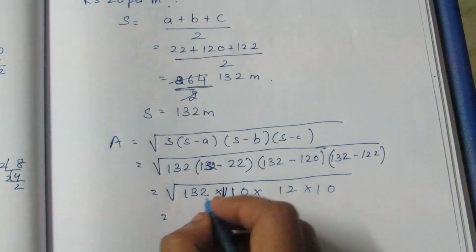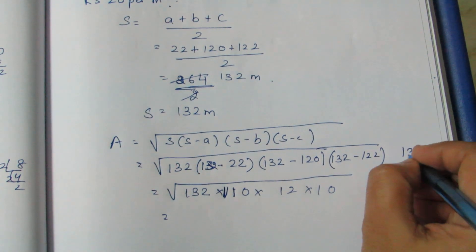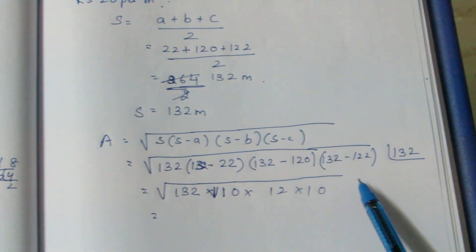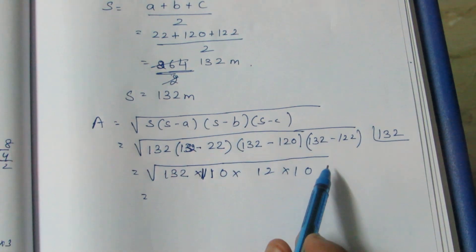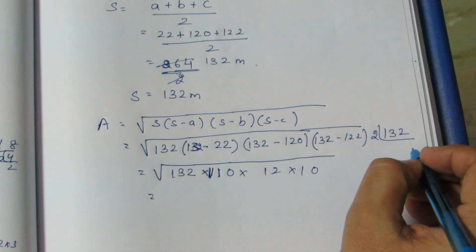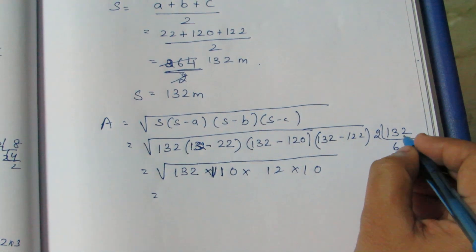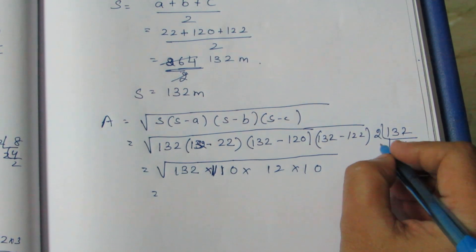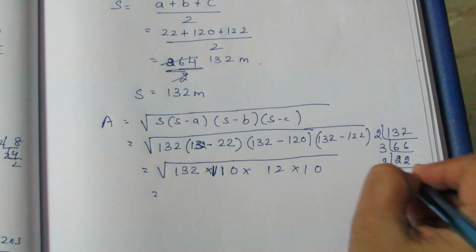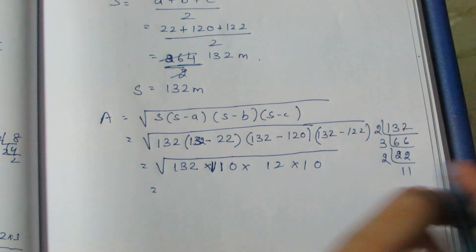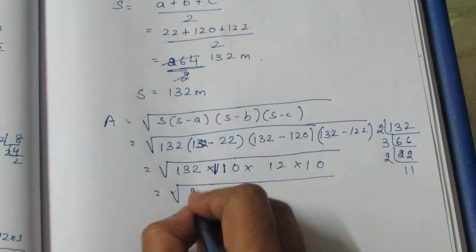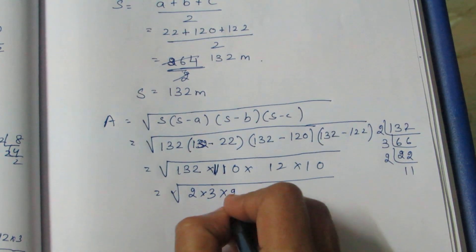Now let's do the prime factorization of 132. We use the multiplication method. 132 equals 2 into 3 into 2 into 11, that is 2 into 2 into 3 into 11.